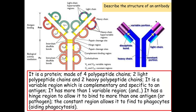They have variable regions at the end, which is the purple area on this simplified diagram. These variable regions are complementary and specific to the antigen which is on the cell surface membrane of the pathogen. They have more than one variable region, and there is also this hinge region here in the middle which allows for flexibility. Because it has more than one variable region and due to this hinge region, this allows the antibody to bind to more than one antigen or more than one pathogen.